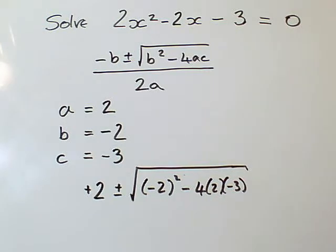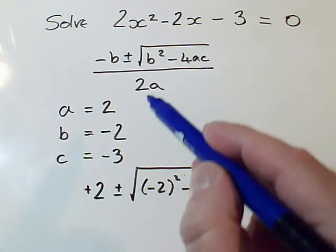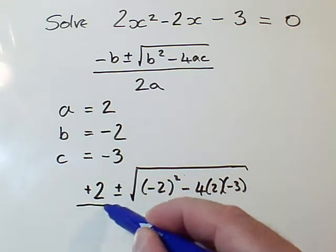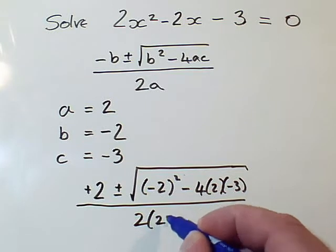And remember, you're doing this in core 1 without a calculator. So I've done the top, I've done the square root, I've got to my 4ac. So I've got to do all over 2 times a, which is 2 times brackets 2.